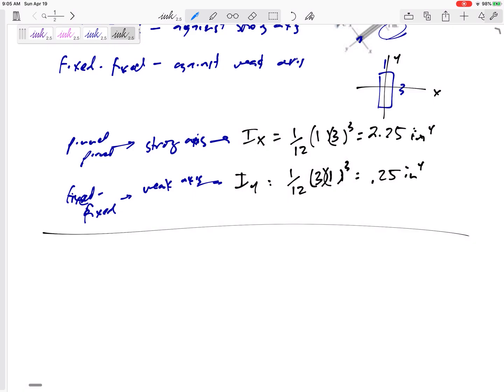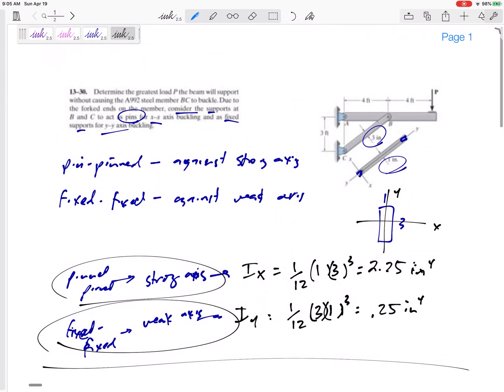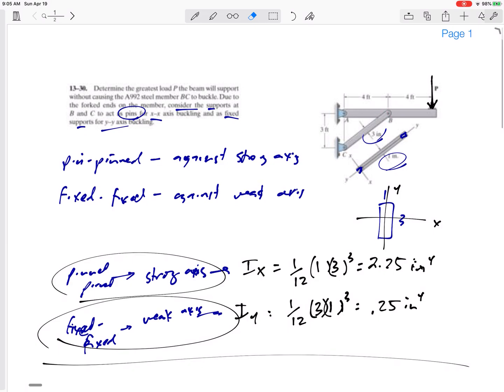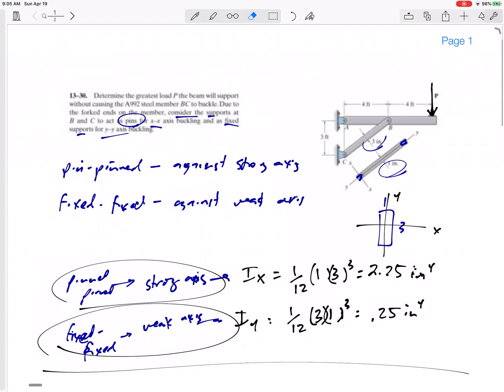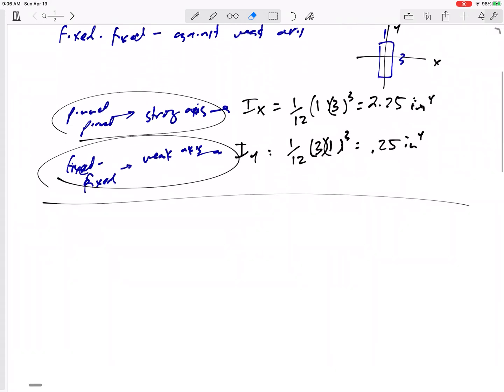In general, we use the smaller I when all things are the same, but the strong axis and weak axis are supported differently, so we need to test them out differently. I'm going to find the largest force P that will buckle the pin-to-pin strong axis, then separately find the smallest force P that will buckle the fixed-fixed weak axis, and compare the two.